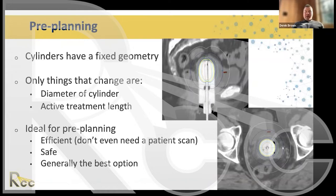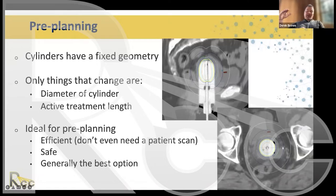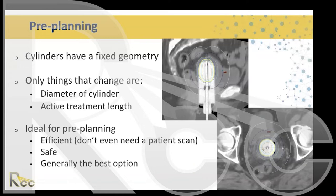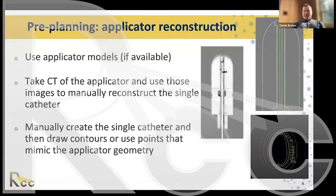In some cases we treat to the surface of the cylinder, and in other cases we treat five millimeters away from the surface. You would have a library of pre-plans that you pull up and use depending on the specific circumstances.